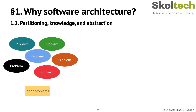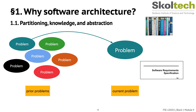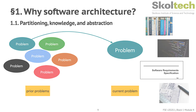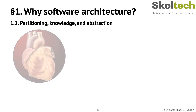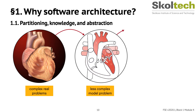Software developers use knowledge of prior problems to help them solve current ones. This knowledge can be implicit know-how or explicitly written down. It can be specific, as in which components work well with others, or general. It comes in many forms including books, lectures, pattern descriptions, source code, or design documents.